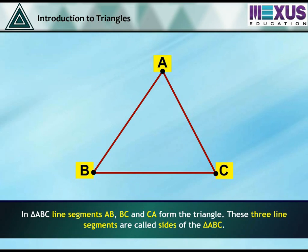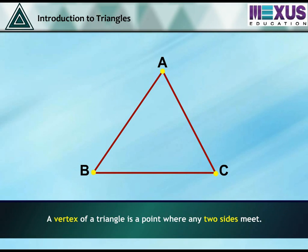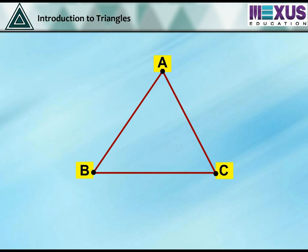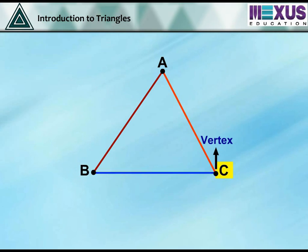In triangle ABC, line segments AB, BC and CA form the triangle. These three line segments are called sides of triangle ABC. A vertex of a triangle is a point where any two sides meet. In triangle ABC, sides AB and AC meet at point A, so A is the vertex. Vertex B is where sides BC and AB meet, and vertex C is where sides AC and BC meet.